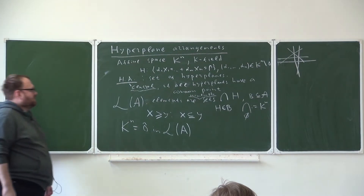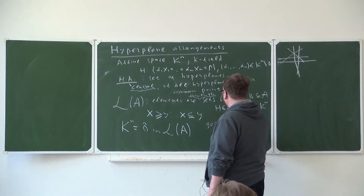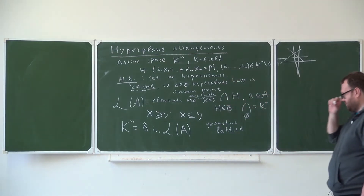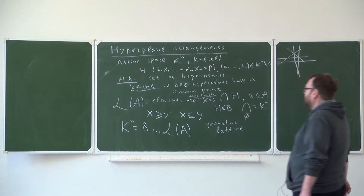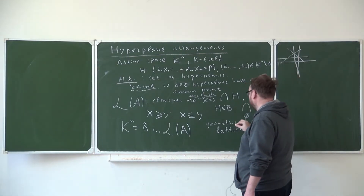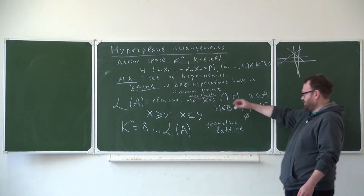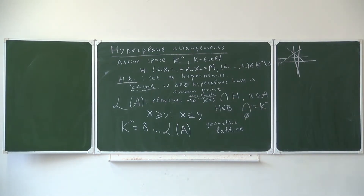We see that this is a geometric lattice. It was defined as geometric because any element is a join of atoms. The atoms are our hyperplanes, and a point is the join by definition.